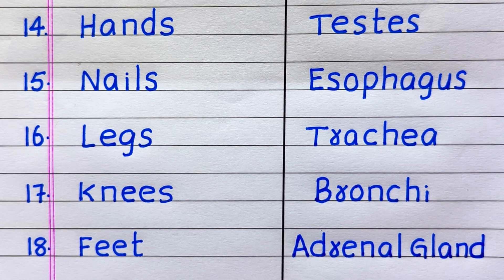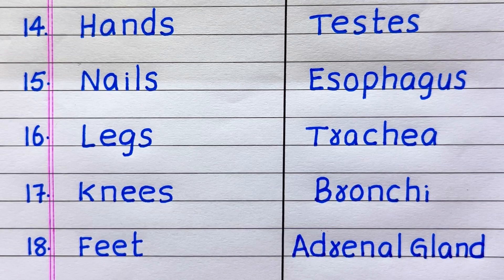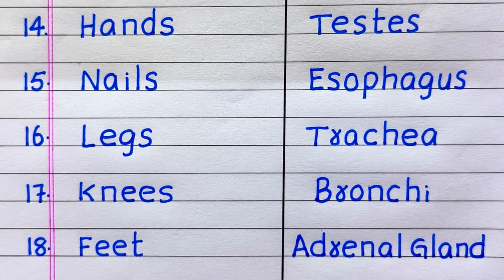The fourteenth name of an external organ is hands. Fifteenth, nails. Sixteenth, legs. Seventeenth, knees. Eighteenth, feet.